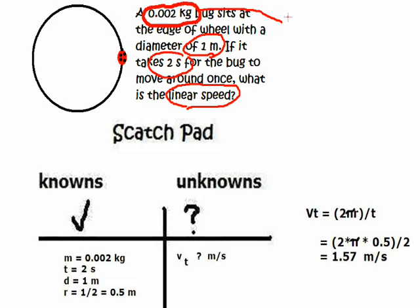You know kilograms is mass. And we know meter stands for distance. In this case it says the diameter. So we'll put that diameter. We'll use that for diameter. And then here's our time. And then we're looking for our linear speed or tangential speed.